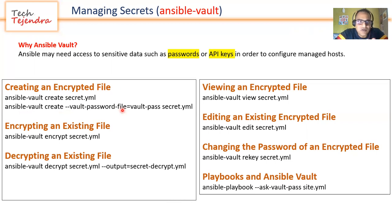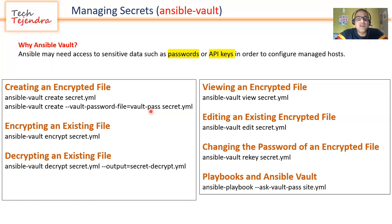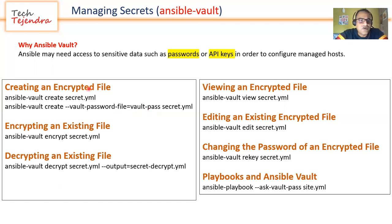Infrastructure automation is not a single person's work — it might be the work of a team, and the password owner might be one person. What they do is create the password and save it in a file — let's call it the vault password file. They create this vault_pass file, store the password there, save it, and then change the file permissions so that only that user can modify or view the password. But the team can still use the file to create or use secret files on the managed hosts.